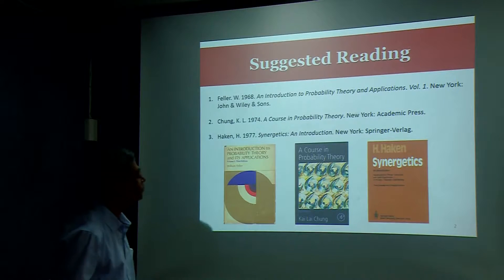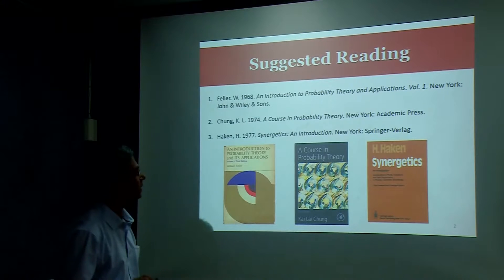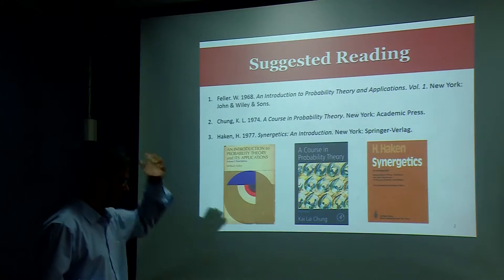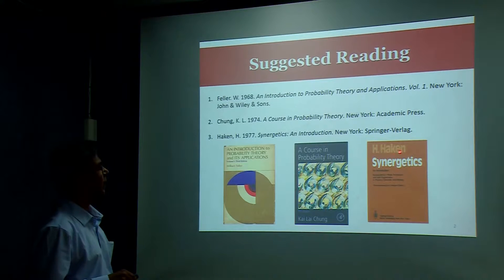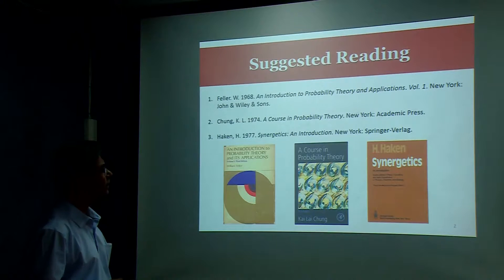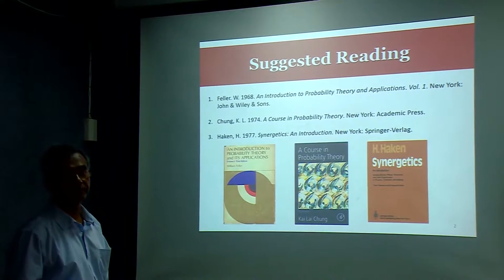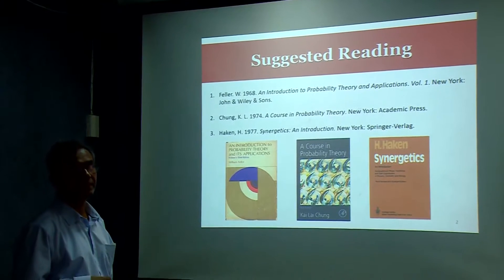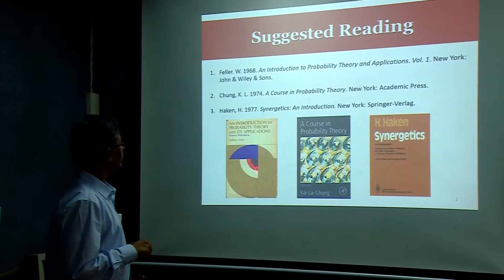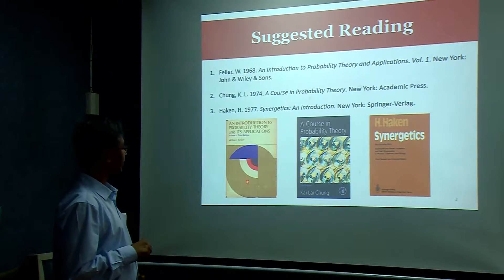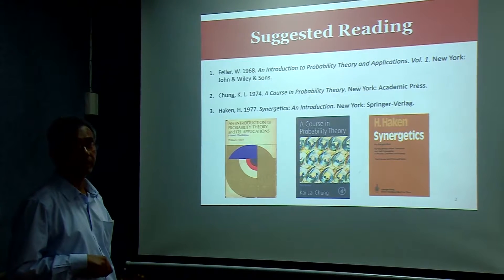The important thing is to define probability such that when you sum over all possible outcomes, it equals 1. These are things you have learned in class 12. Now, what is joint probability? I am doing two experiments together — throwing a die and tossing a coin. What is the probability of getting heads and also rolling a 5? That is 1/2 times 1/6, which equals 1/12. The joint sample space now has 12 outcomes.